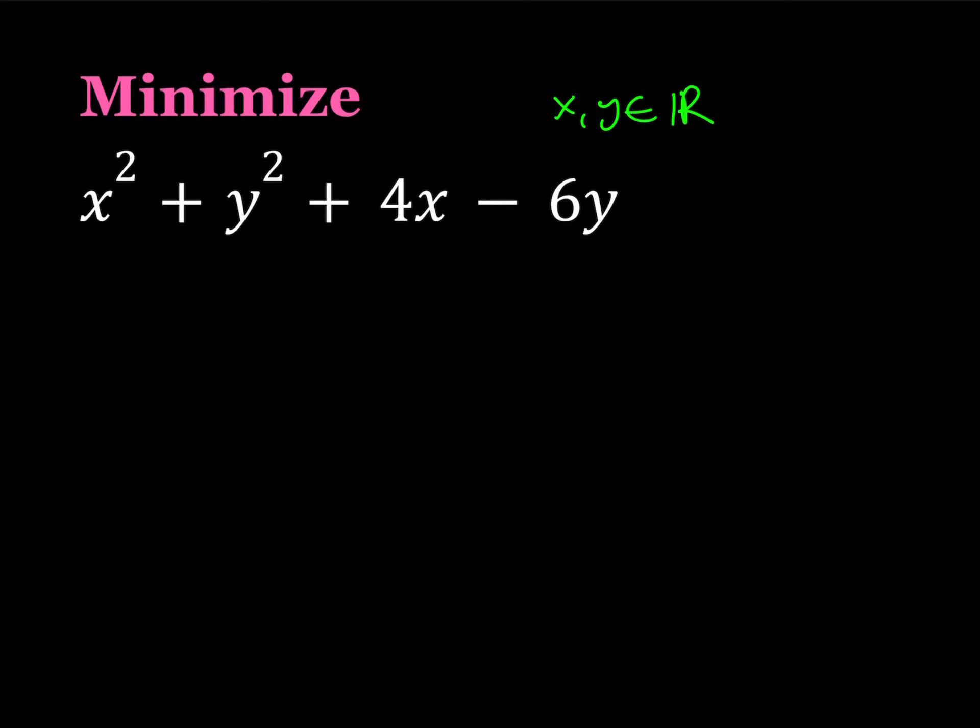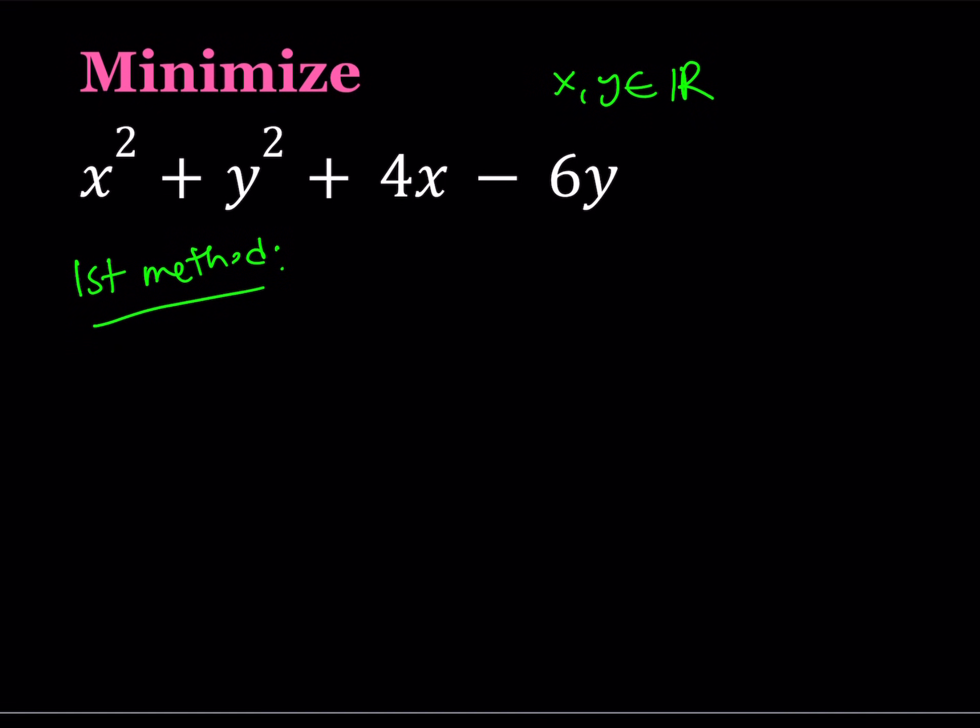Alright, I'll be presenting two methods. Let's start with the first one. The first method involves partial derivatives. So I'm going to write my expression as a function of two variables: f of x, y is x squared plus y squared plus 4x minus 6y.